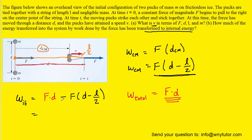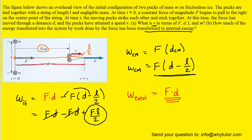What we're going to do is take the total work done and subtract the work done on the center of mass; whatever is left over equals the work transformed into internal energy. Distributing the minus sign: F times D minus F times D cancels, and the remaining term is F times L divided by 2. So the work transformed into internal energy equals FL/2. This is the correct answer to part B.